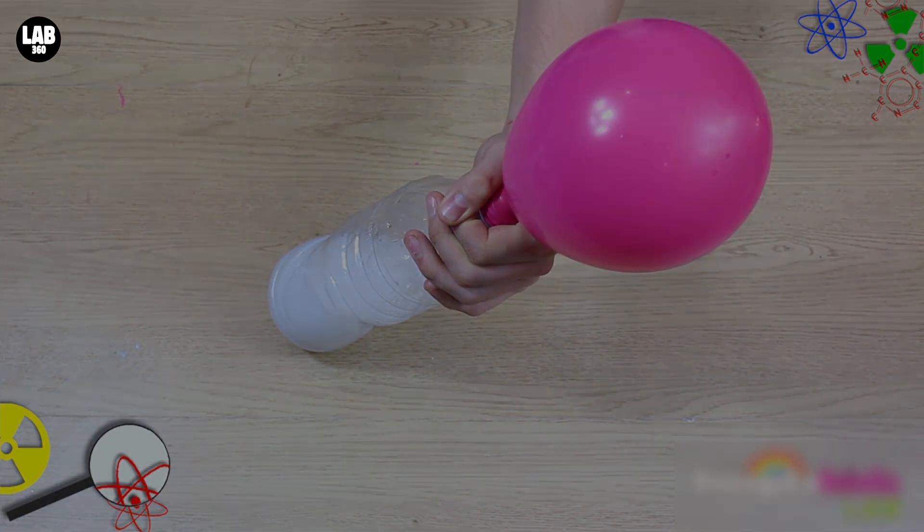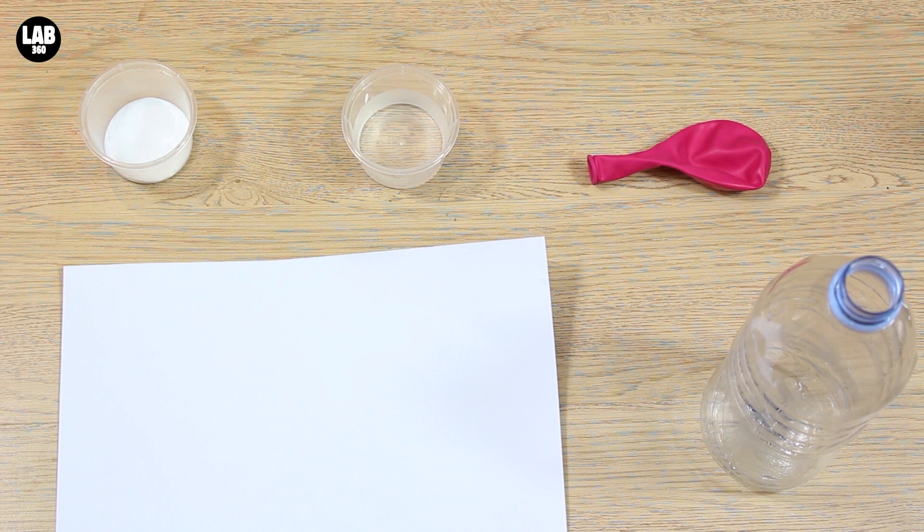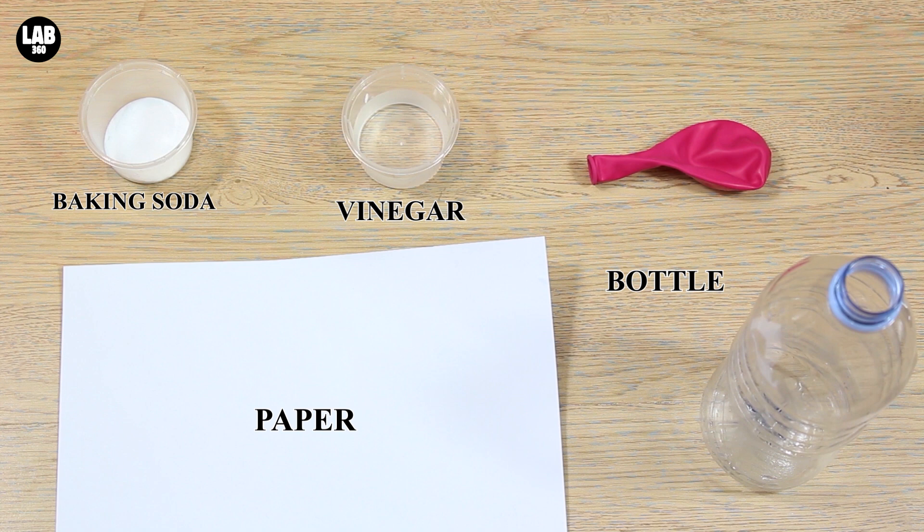What you're going to need to do this experiment is one tablespoon of baking soda, quarter of a cup of vinegar, some paper, a bottle, and a balloon.